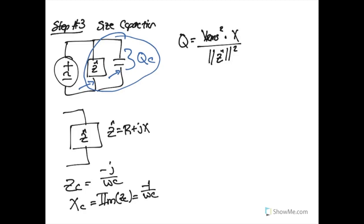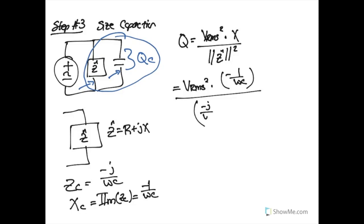Plugging in all values: we have VRMS² times negative one over ωC for the reactance, divided by the total impedance -j/(ωC) squared in magnitude. If we plot this in the complex plane, the magnitude of the impedance is simply one over ωC, so the denominator becomes one over ω²C².